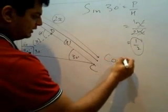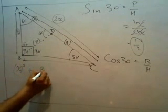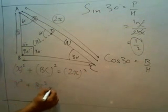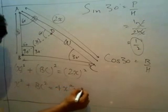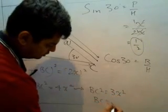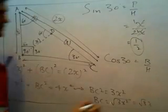If I have to evaluate cos 30, that means base upon hypotenuse, I need to have the measurement of BC. By Pythagoras theorem I can say that X squared plus BC squared must have been equal to the square of 2X. That means X squared plus BC squared equals 4X squared, and eventually BC squared equals 3X squared, and BC equals root 3 times X.